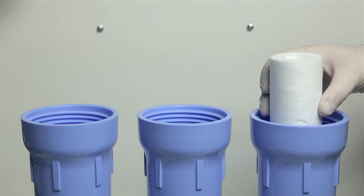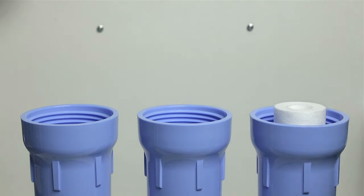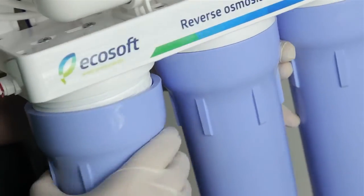Insert cartridges into the first and second housing in the direction of water flow. Tighten all three sumps by hand.